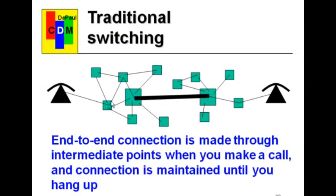You might think everybody's connected to everybody, but not so. This phone is only connected by a dedicated wire line to the local office. When this receiver is picked up, something happens and it knows that line is open. Somebody puts a number in — that telephone number has to establish, through the mechanism of the phone system, a connection between the two phones and hold that connection circuit open. That telephone line is open and the communication circuit is continuous until one or the other party hangs up and breaks that connection.